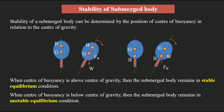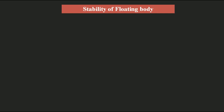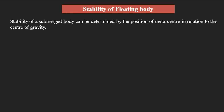Next we go for stability of a floating body. The stability of a floating body can be determined by the position of the metacenter in relation to the center of gravity — whereas for a submerged body, it was determined by the center of buoyancy relative to the center of gravity. For a floating body, we use the position of the metacenter in relation to the center of gravity.